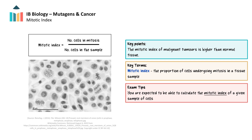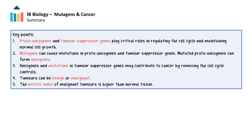You are expected to be able to calculate the mitotic index of a tissue sample. Remember, you can identify which cells are undergoing mitosis by looking for the characteristic appearance of prophase, metaphase, anaphase, and telophase, as well as cytokinesis. Understanding the concepts shown in this video is important because they reveal how disruptions in the process of cell division can lead to cancer, and why precise regulation is crucial for maintaining cellular health.